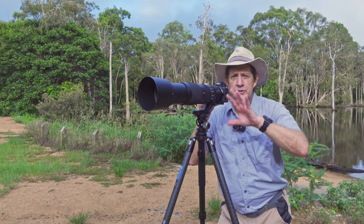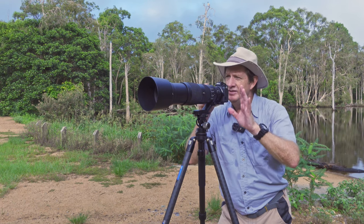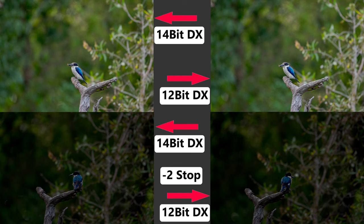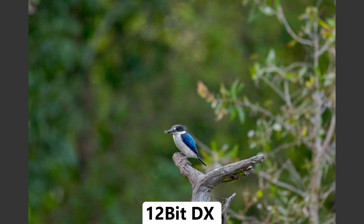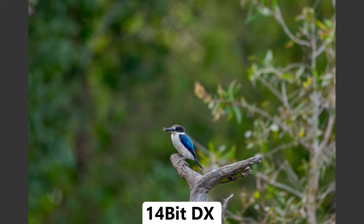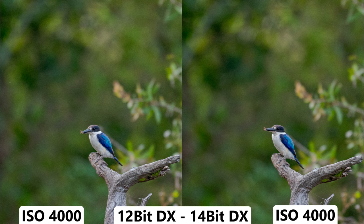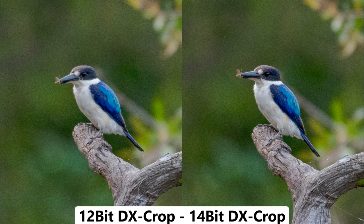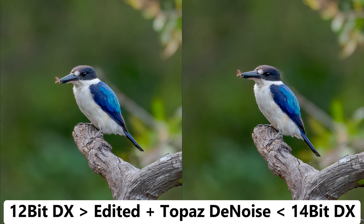Note: if you're shooting JPEG, switching between 12 and 14-bit makes no difference — this is only relevant in RAW. Here are four images of the forest kingfisher taken in DX mode. The ISO was 4000, and I've cropped in quite a bit so the noise is visible. You can see a slight difference — the 12-bit version shows slightly more noise in the background — but after using Topaz DeNoise, the images are just about even. It would be very hard to choose which is 12-bit and which is 14-bit.